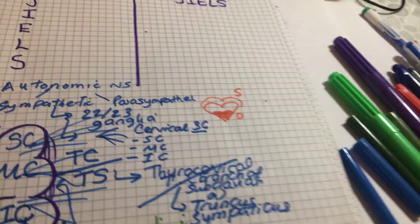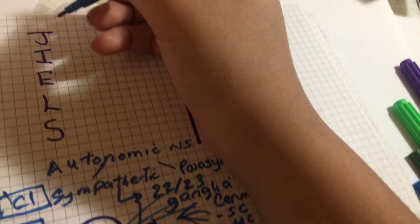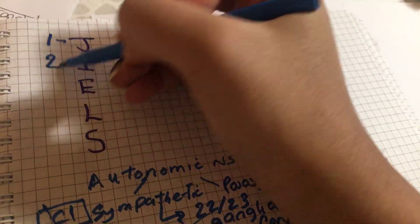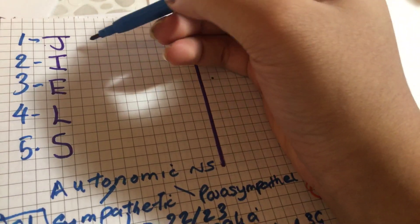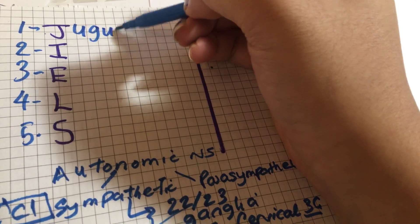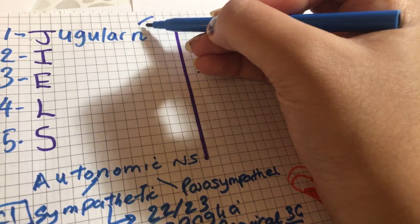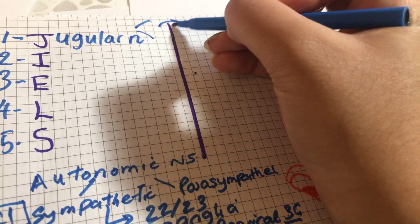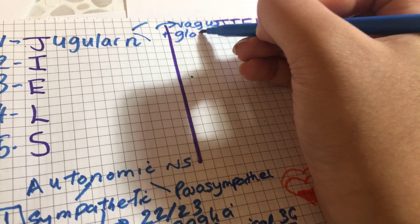Okay, so in terms of what comes off of the superior cervical ganglion, the superior cervical ganglion gives us five different nerves. The first nerve is the jugular nerve, and this actually has two branches which go in the direction of vagus and glossopharyngeal.